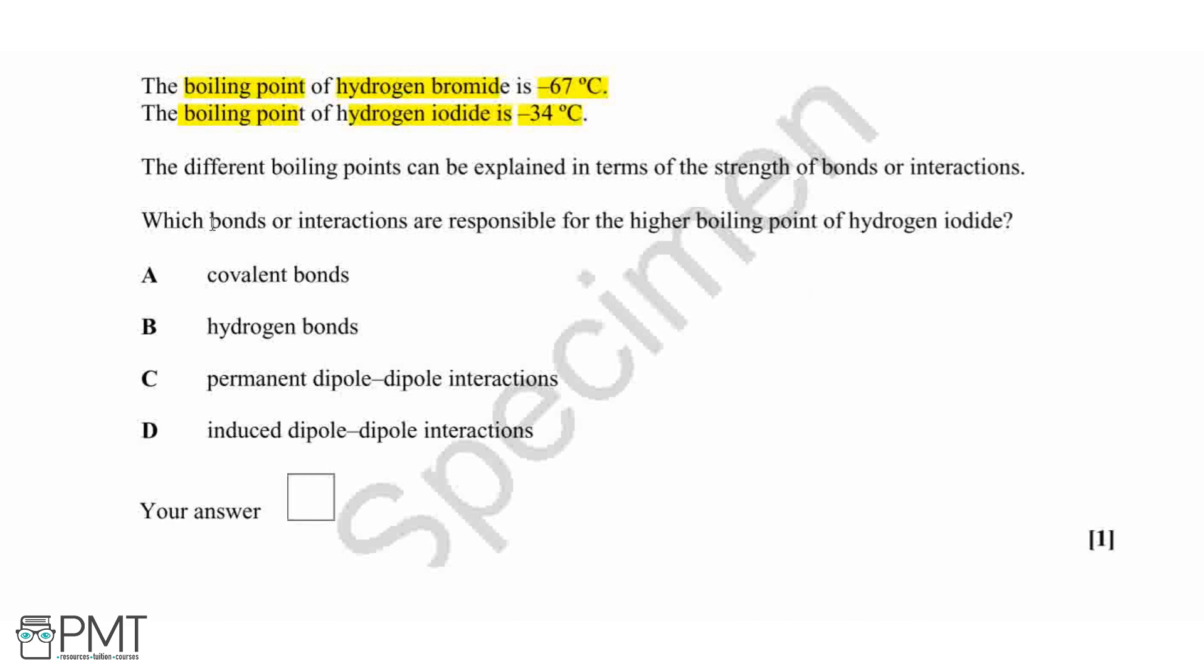For this question, we need to identify which bonds or interactions are responsible for the higher boiling point of hydrogen iodide. Hydrogen bromide and hydrogen iodide are both non-metal based compounds with formulas HBr and HI, respectively, and both have simple molecular structures.